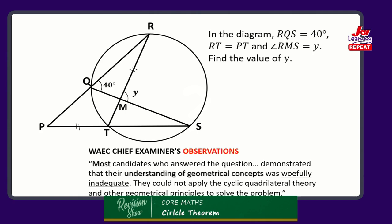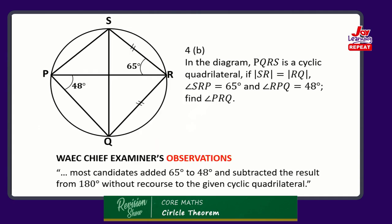The chief examiner on question 4b, 2018 noted that most candidates added 65° (angle SRQ), angle SRP, and 48° (angle QPR), and subtracted the result from 180°, rather arbitrarily, without recourse to the given cyclic quadrilateral.